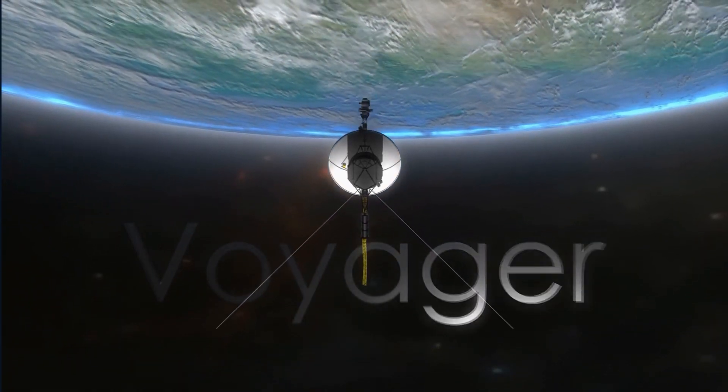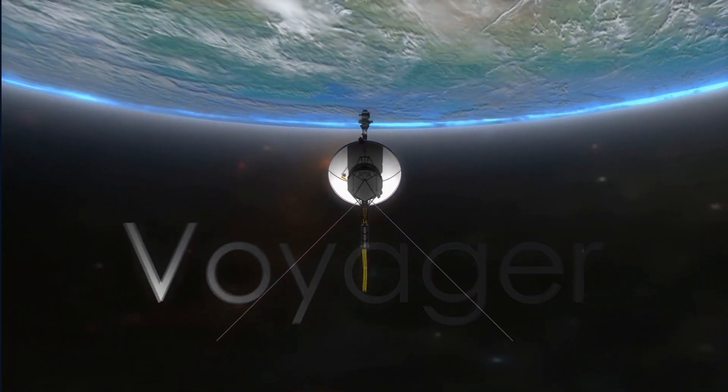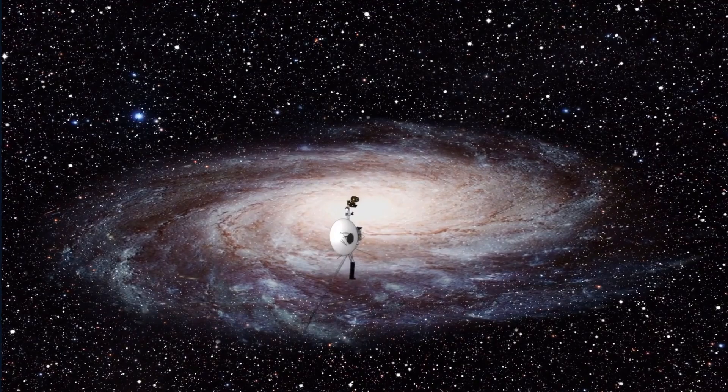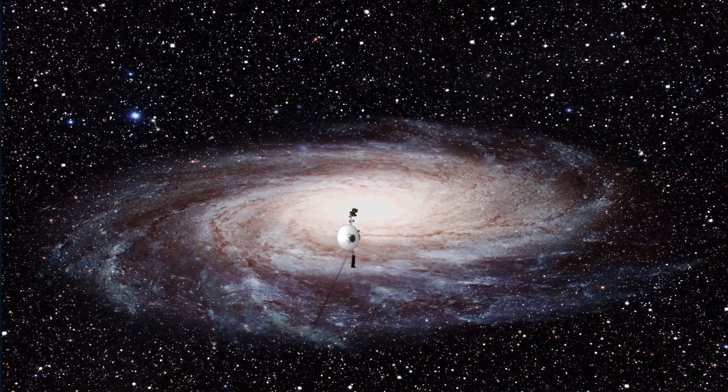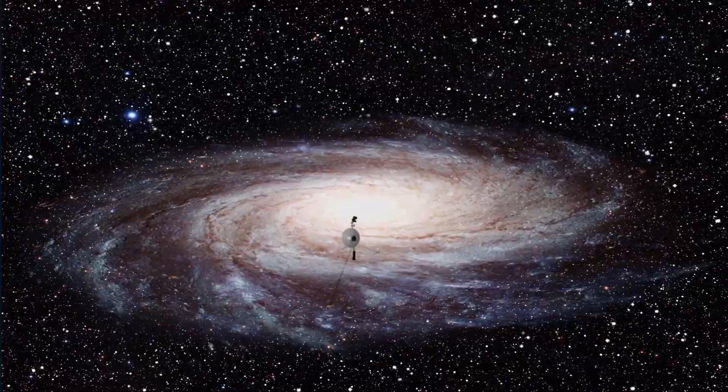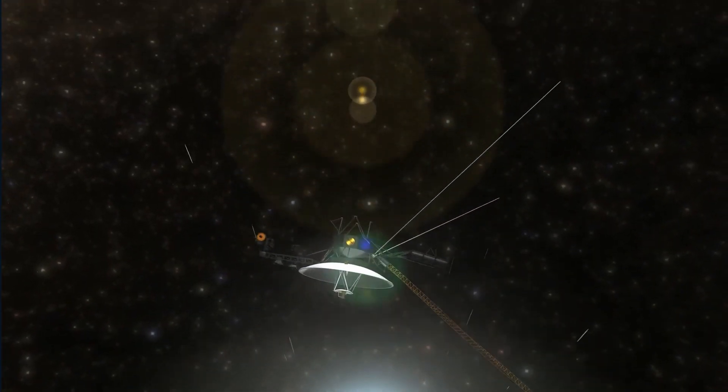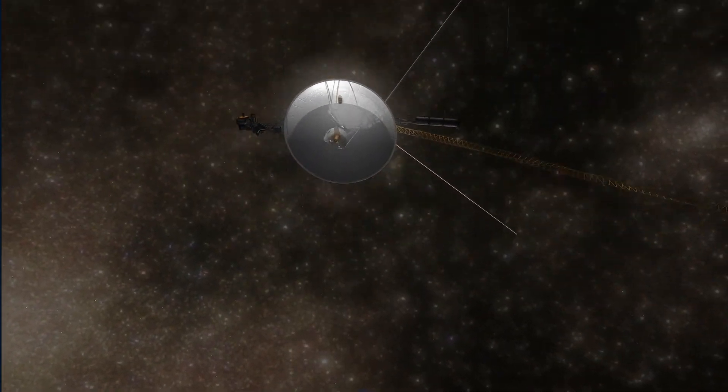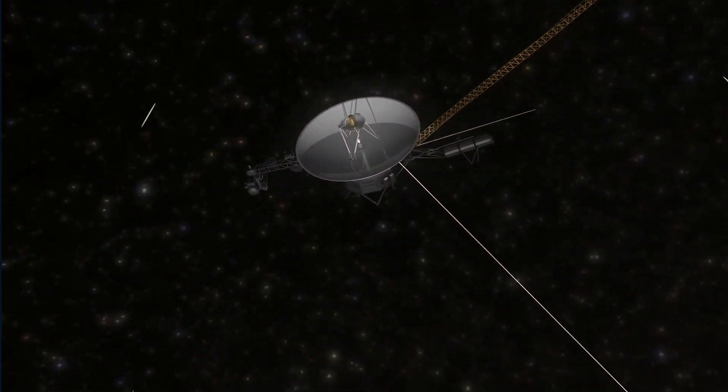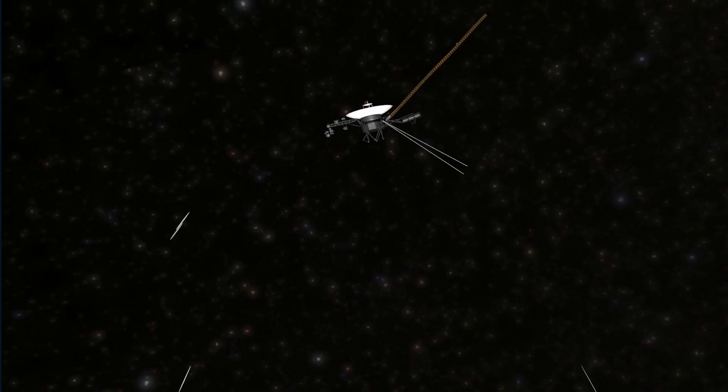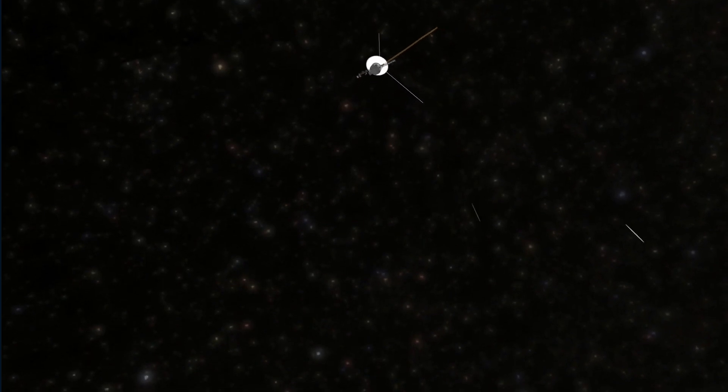The most distant objects that the DSN communicates with are NASA's two Voyager spacecraft. Because the Voyagers are so far away, the signals to the antennas are very weak. In fact, the power that the DSN antennas receive from the Voyager signals is 20 billion times weaker than what is needed to run a digital watch.